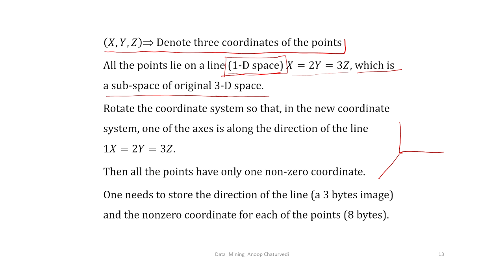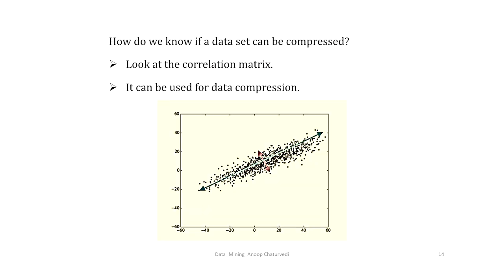You can rotate the coordinate system so that one axis is along the direction of the line x=2y=3z. Then all points have only one non-zero coordinate. You need to store just the direction of the line (3 bytes) and the non-zero coordinate for each of the 8 points (8 bytes). In practice, to know whether a dataset can be compressed, you look at the correlation matrix — if observations are highly correlated, data compression is feasible.